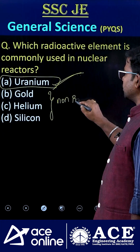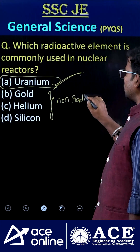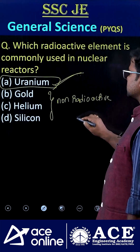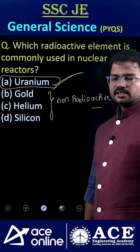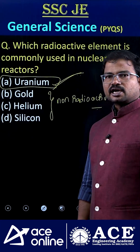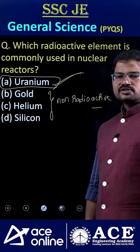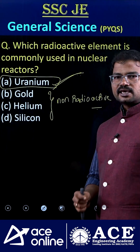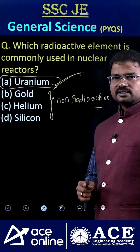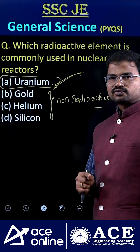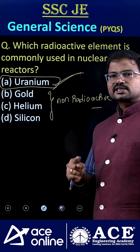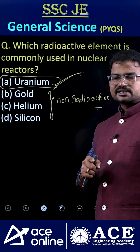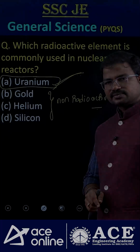Gold, helium, and silicon are non-radioactive elements. Here I have a question for you: if plutonium is used as a fuel, what is the name of those thermal nuclear power plants? If you know the answer, please comment. Thank you.